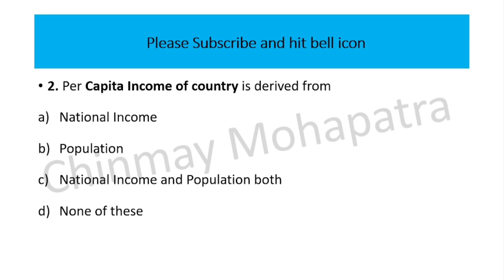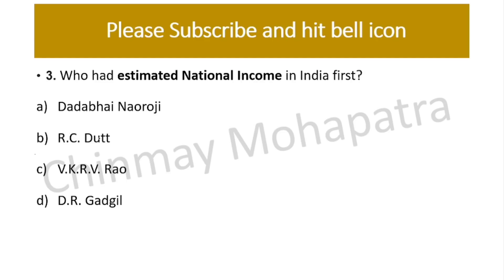Question number two: per capita income of a country is derived from — so per capita income is derived from national income and population both, because per capita means per head. We calculate total national income divided by population to get per capita income.